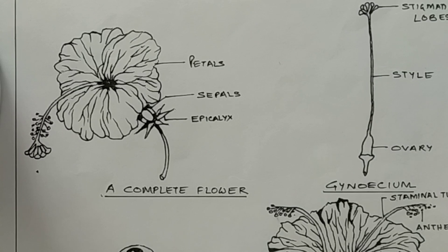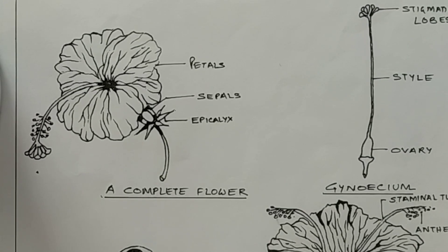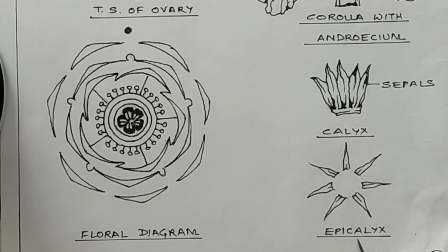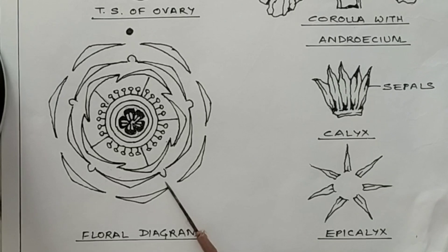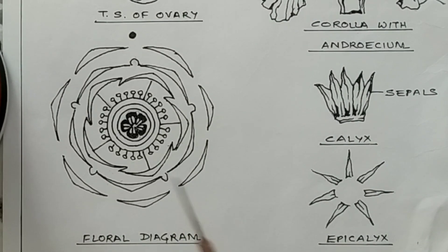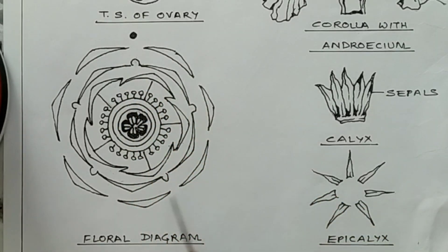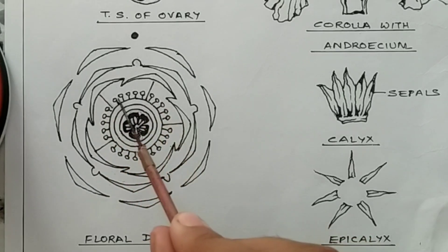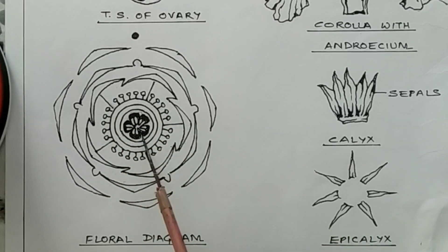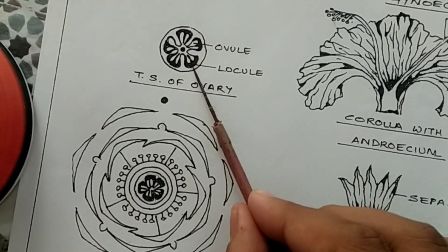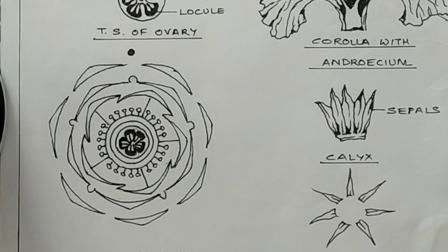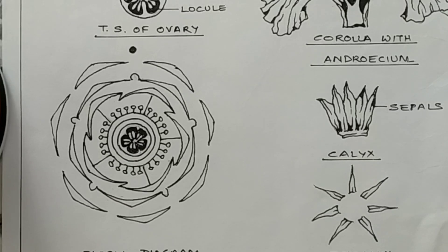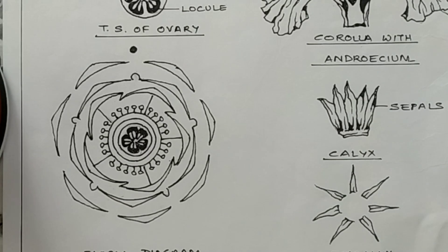Next, draw the corolla or petals with androecium — the corolla part has petals as its individual members. You can start your drawing from the epicalyx and gradually proceed to the calyx. On the left-hand side you have to draw the floral diagram of the flower. In the outermost layer it is the epicalyx, then the sepals forming the calyx, then corolla, and the androecium or pollen grains. In the center, draw the T.S. of the ovary — the transverse section of the ovary. After dissecting the transverse section, you can observe it under the microscope and you will find five chambers within the ovary.